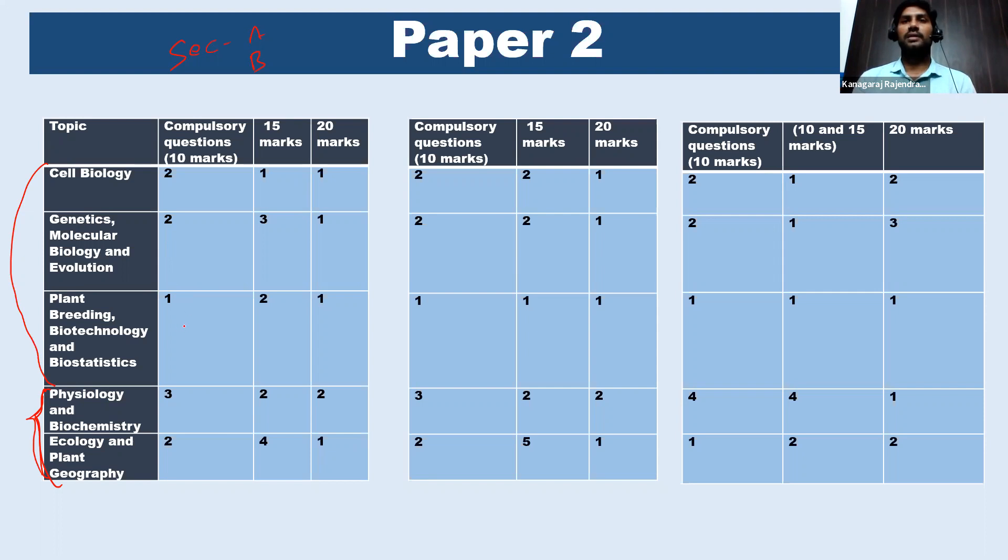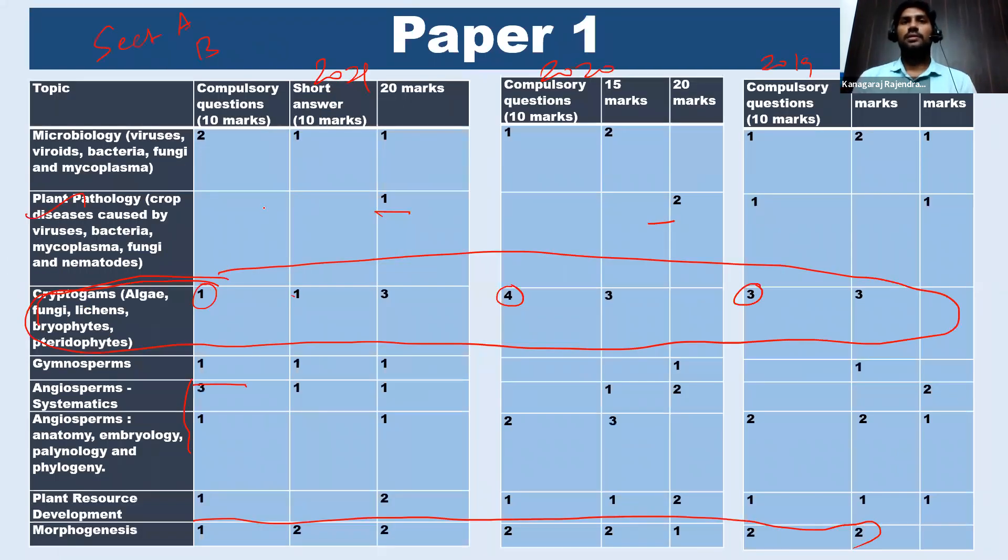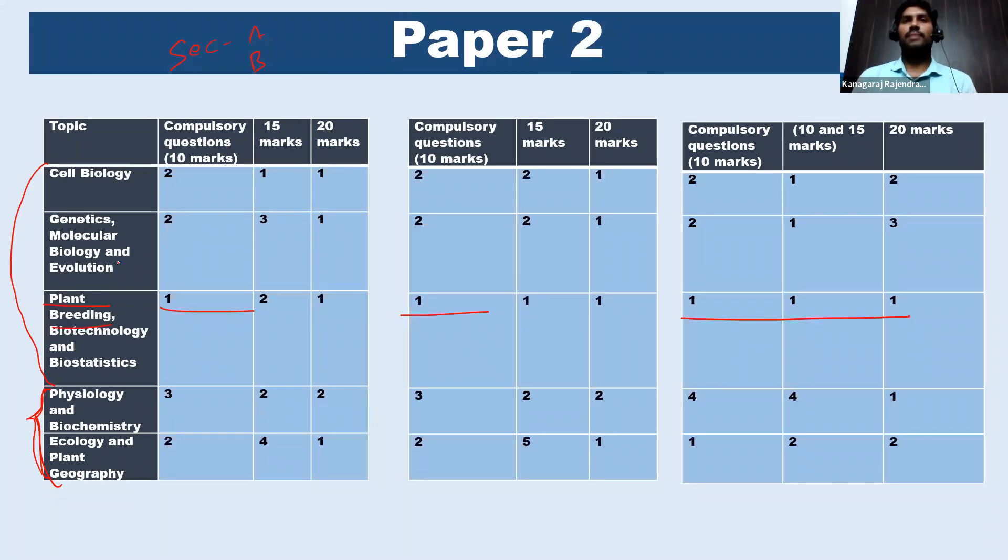And here also, again, if you look at the plant breeding topic, there were less number of questions from plant breeding. So if you see paper one, less number of questions from plant pathology, and then paper two, from plant breeding. So the interesting fact is, since I'm taking both agriculture and botany, in agriculture also, in paper two, these topics are common. These topics are part of agri-paper two syllabus: cell biology, genetics, plant breeding, physiology, and ecology.